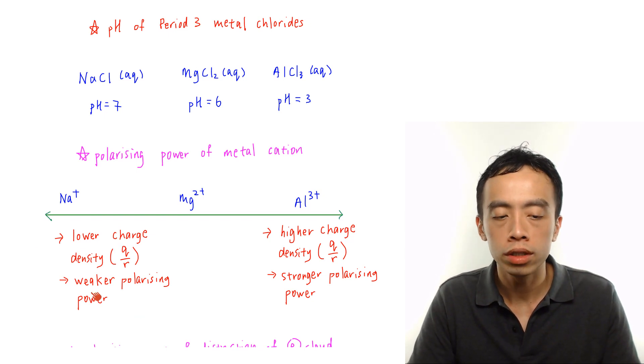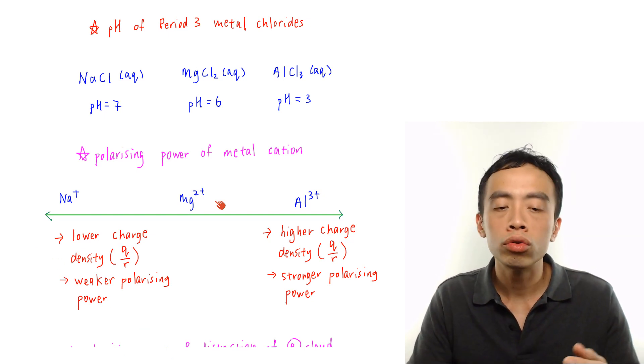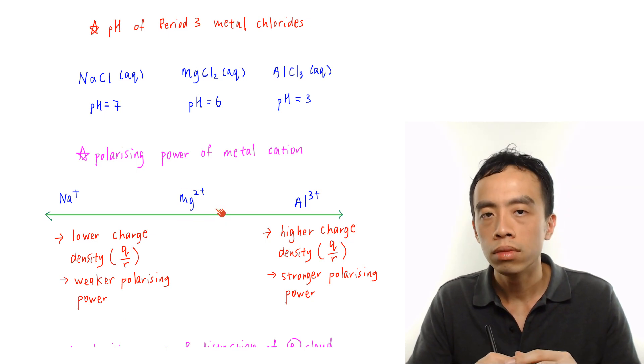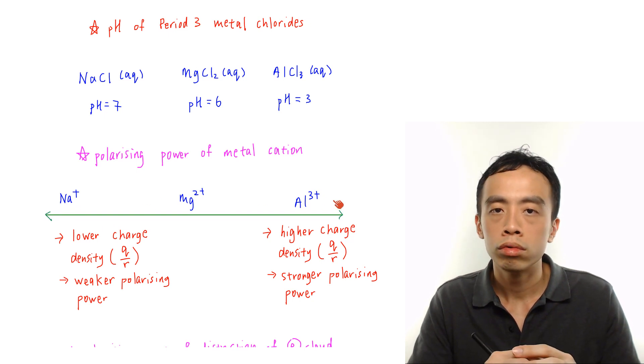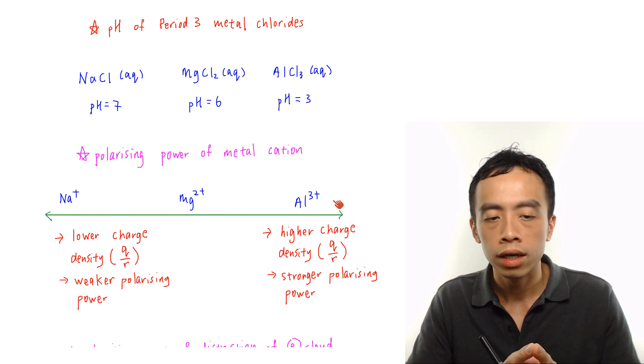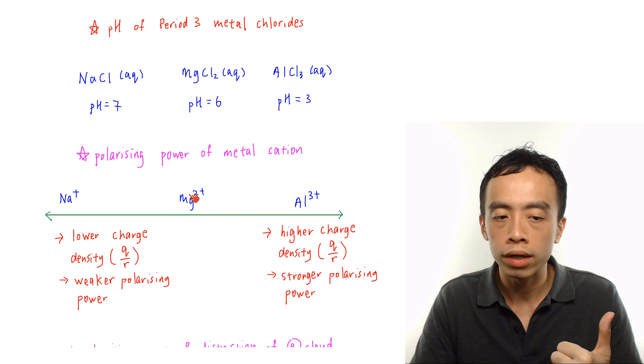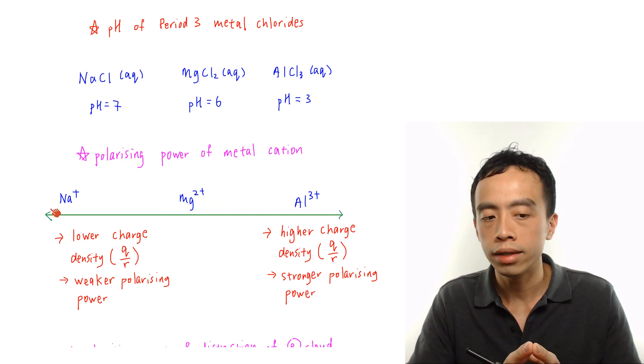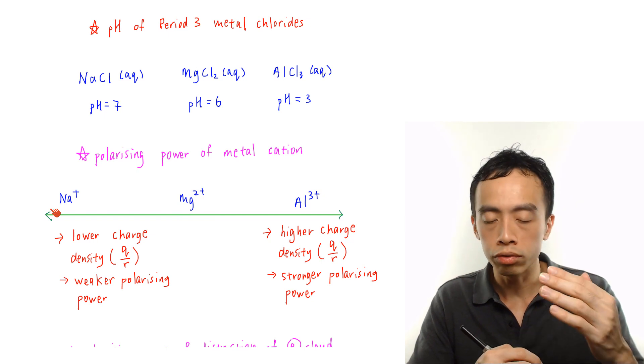Mg2+, because the charge is higher, size is roughly the same, because they are in the same period, so they roughly have the same size. So we would expect Mg2+ will have a higher charge density as compared to Na+, so the polarizing power would increase.